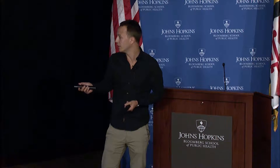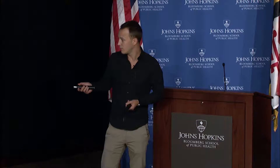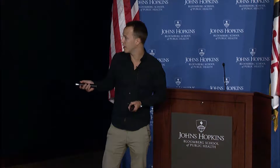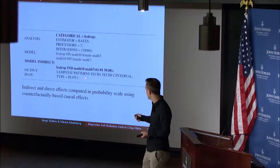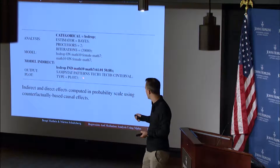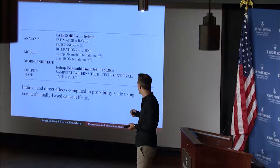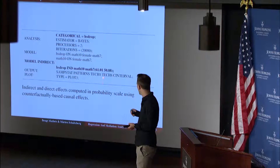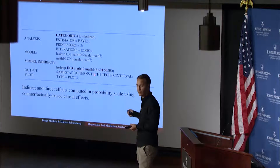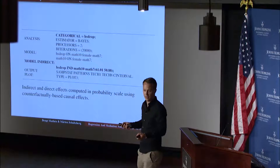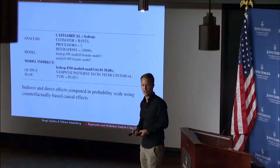In the modeling command everything is the same. We put our outcome variable, and since we don't have any moderation we have Y, then math10 which is the mediator, and math7 which is the exposure. We also have to specify the shift in the exposure for which we want to see the effect — it's a continuous exposure.